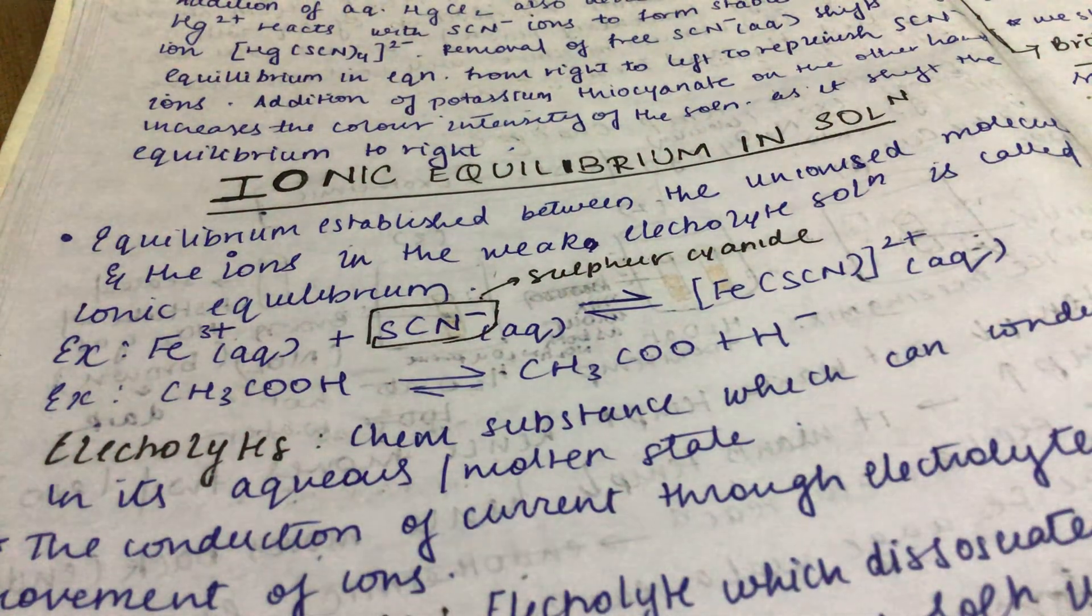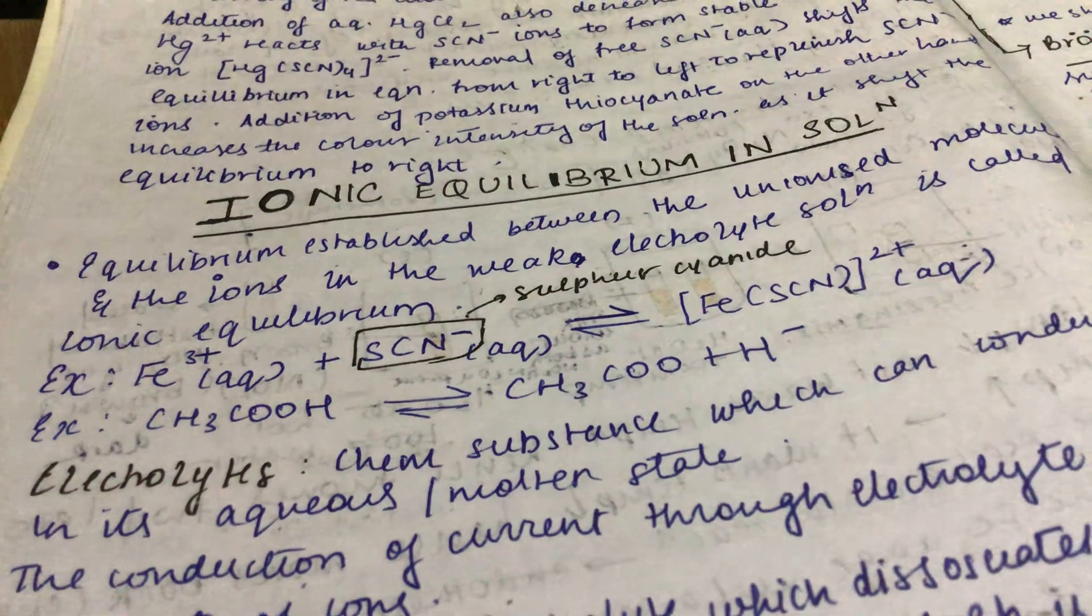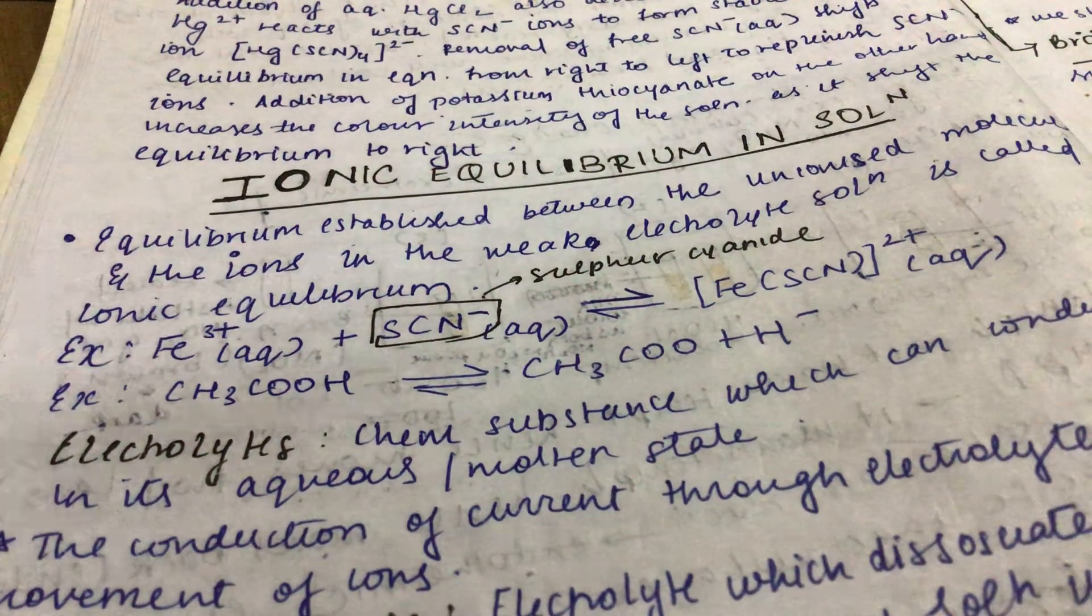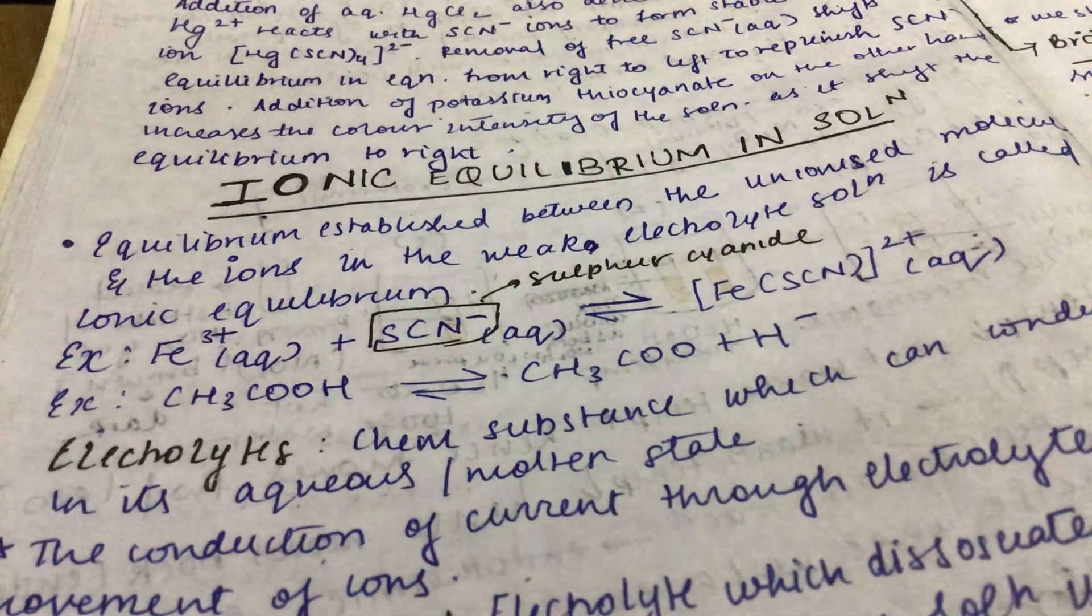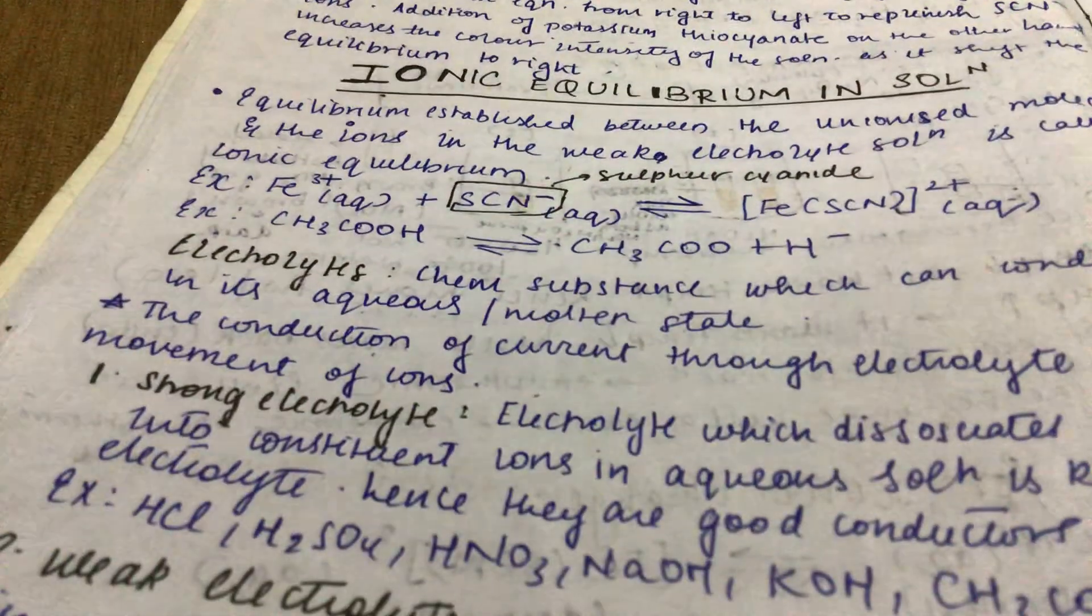Ionic Equilibrium in Solution. Equilibrium is established when unionized molecules and ions in weak electrolyte solution coexist, called ionic equilibrium. When weak electrolyte solution partially ionizes.